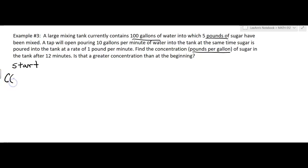Let's start at the beginning — the concentration when no minutes have passed. Right at the start, how many pounds of sugar do we have? Five. How many gallons of water? One hundred. So the concentration is 5 over 100, which gives us pounds per gallon.